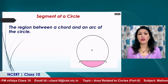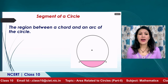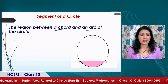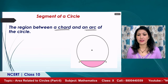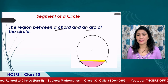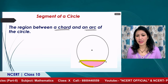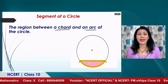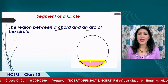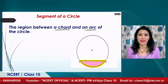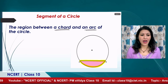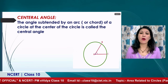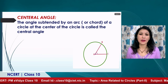Let us now discuss the segment of a circle. The region between a chord and an arc of a circle is known as the segment of the circle. Here we can see that AB is the chord and AB is also an arc, and the pink shaded area between this chord and this arc is known as the segment of the circle.